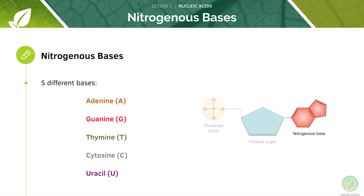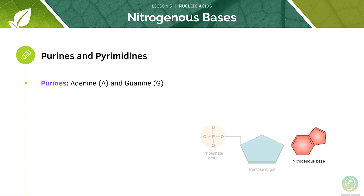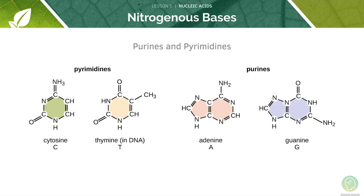The five different bases are shown here — you should try and remember their names. There are two main classes of nitrogenous bases: purines, including adenine (A) and guanine (G), and pyrimidines, including thymine (T), cytosine (C), and uracil (U). There's no need to memorize the structures, just understand that they're all different.